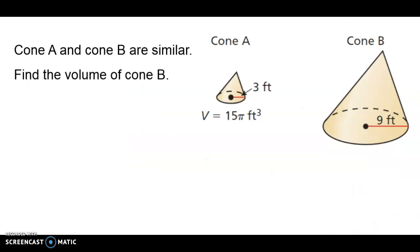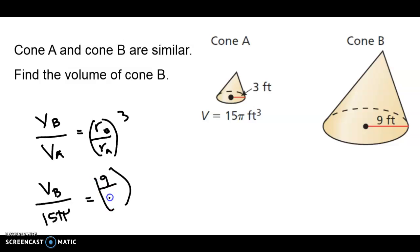Now let's use what we learned about similar solids again to use scale factors to find the missing volume. So we know that the volume of cone B divided by the volume of cone A is actually the cube of the scale factors. So let's get the radius of cone B over the radius of cone A. So volume of cone B divided by 15π is equal to the radius of cone B is 9, while the radius of cone A is 3.